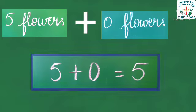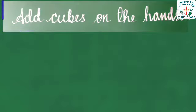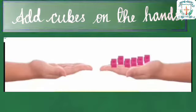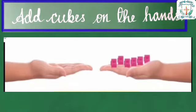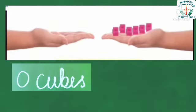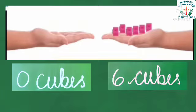Example 2: Add cubes on the hands. Here we can observe the cubes on both the hands. There are 0 cubes in the first hand and 6 cubes are there in the second hand. Add 0 plus 6.